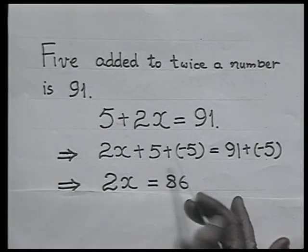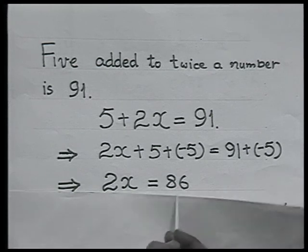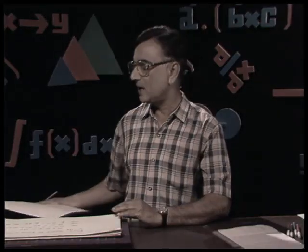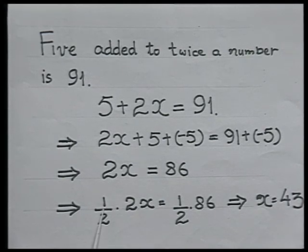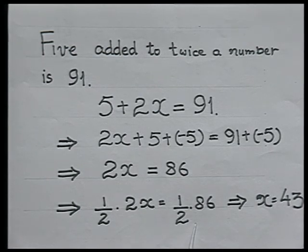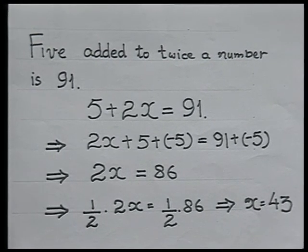Since this 5 and negative 5 are additive inverses of each other, their sum is 0, and 91 plus minus 5 gives me 86. So 2x becomes equal to 86, and from here I can get the value of x by dividing both sides by 2, or multiplying by 1/2. Multiplying by 1/2 on both sides — remember, in an equation, if we multiply by the same number on both sides, the equation does not change. From there I get the value of x as 43.